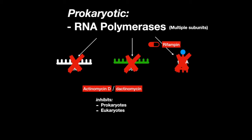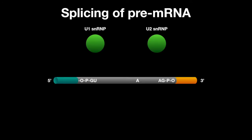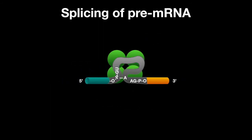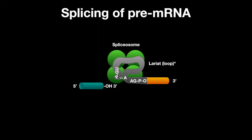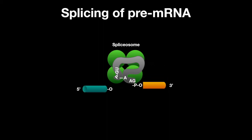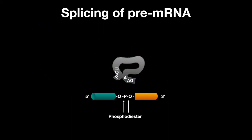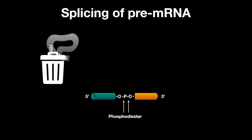Now let's go over the splicing of pre-mRNA. Small nuclear ribonucleoproteins, or SNRNPs, combine with the primary RNA transcript, then come together to form the spliceosome. The 5' end is cleaved and a lariat-shaped intermediate is made. The 3' hydroxyl attacks the phosphate group at the end of the loop, and a phosphodiester bond is formed, leaving the intron loop structure as a byproduct.